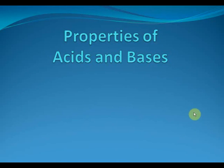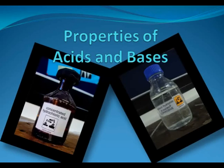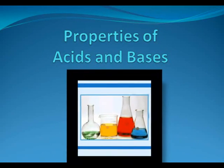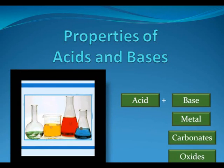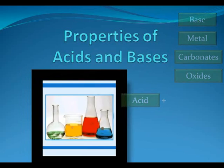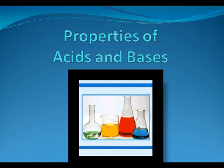Hi students! Today we are going to learn about two chemicals that are very important in any chemistry lab: acids and bases. These acids and bases are actually very corrosive substances. We are going to study about the properties of acids and bases in this chapter — how acids react with bases, metals, carbonates and oxides, forming different compounds and giving out different gases.